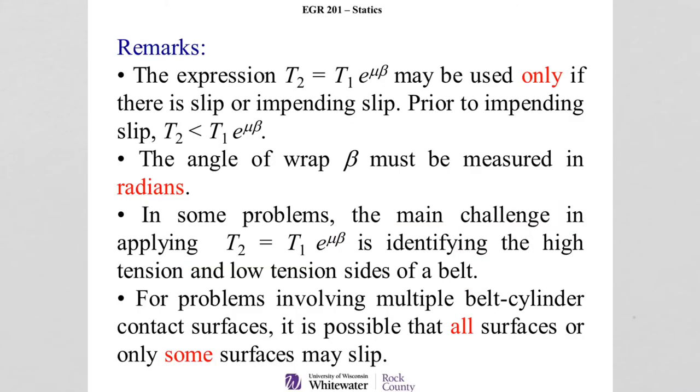So just a few comments on this before we do an example is that T2 equals T1e to the mu beta is only used and can be applied if we're at slip or impending slip. Prior to that, T2e to the mu beta is less than that.